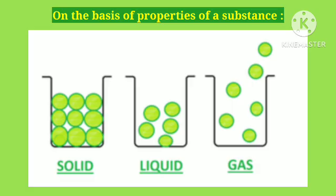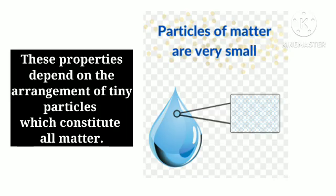On the basis of properties of a substance, it is categorized as solid, liquid or gas. These properties in turn depend on the arrangement of tiny particles which constitute all matter.